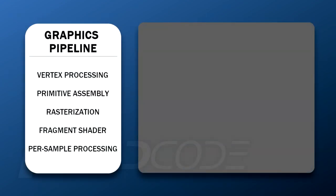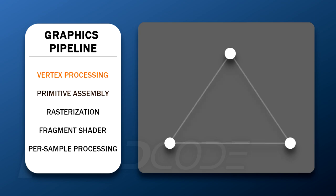Let's take a look at each step of the graphics pipeline. First, we have the vertex processing step, where each vertex retrieved from the vertex buffer, as defined by the VAO, is manipulated by a vertex shader and optionally by other types of shaders like a geometry shader. Shaders will be explored in more depth in the next tutorials.